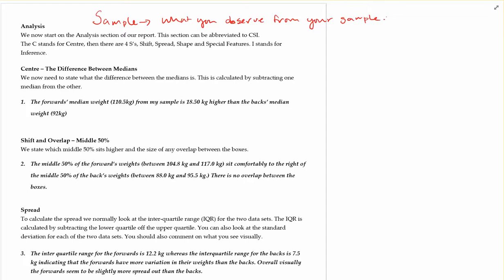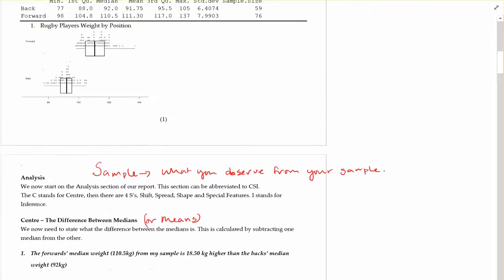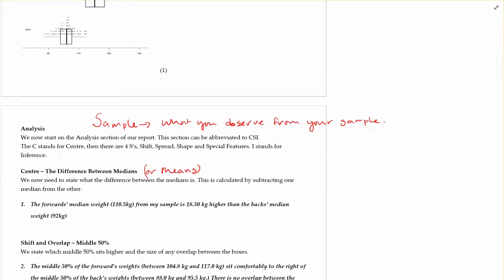There are a few things we're going to talk about. We'll look at center first. The center is the difference between the medians, or in the case that you decide to investigate the means, it could also be the difference between the means. We're going to look at our data at the very basic level and state exactly what the difference is. Our medians are 92 for the backs and 110.5 for the forwards — this is the weight of the rugby players in kilograms.